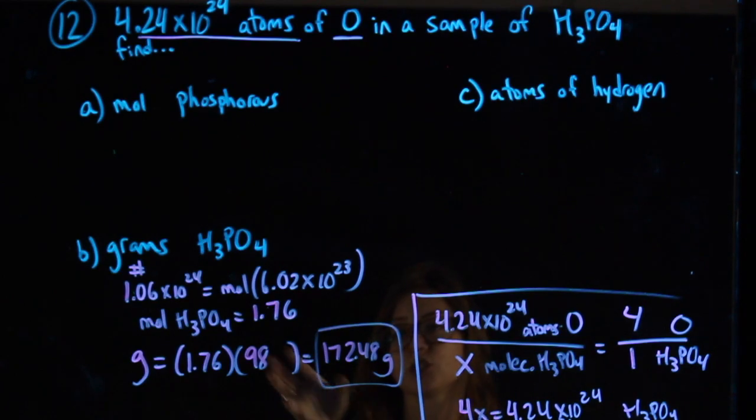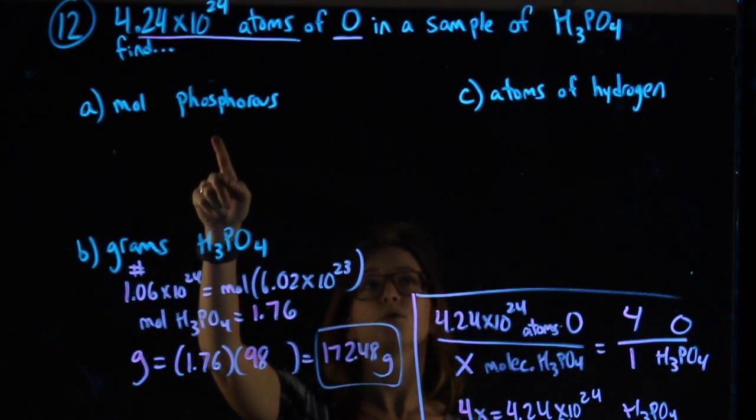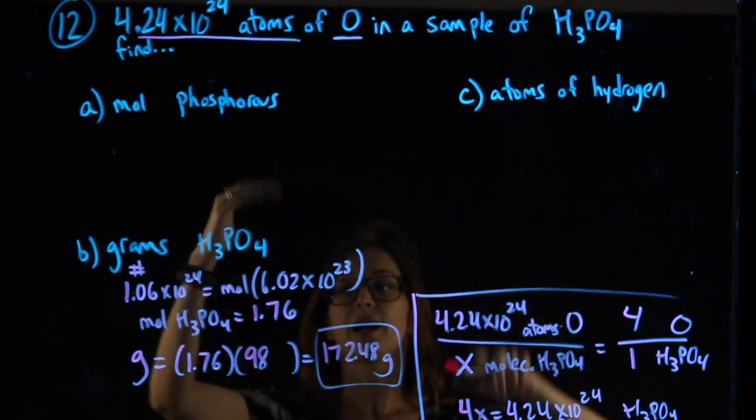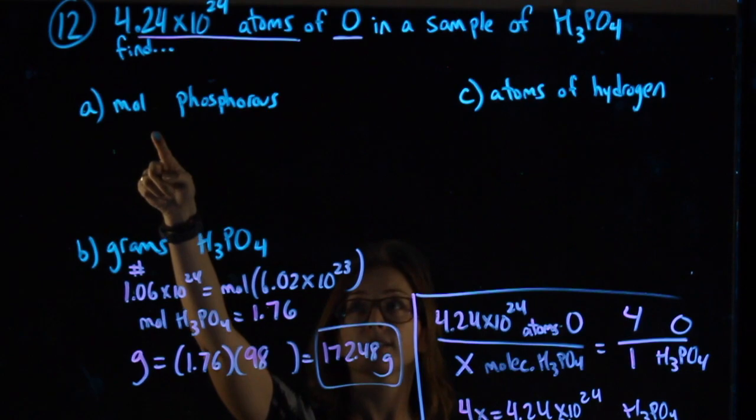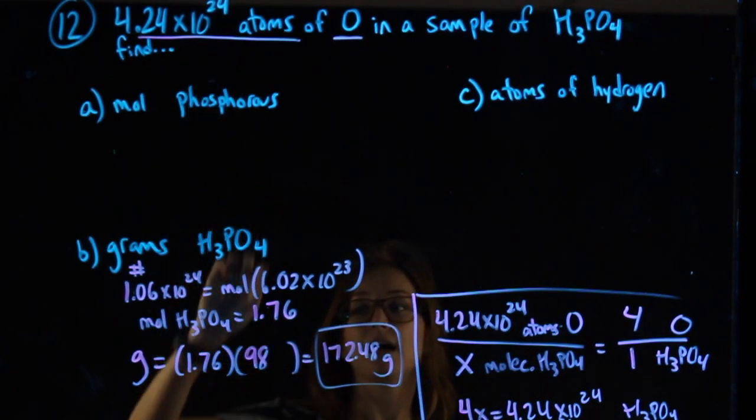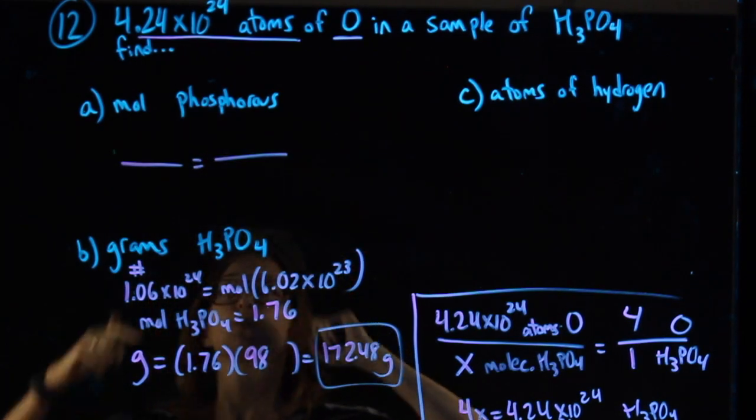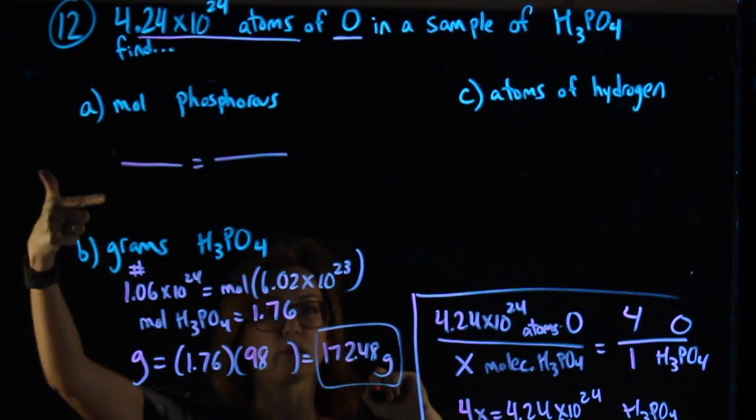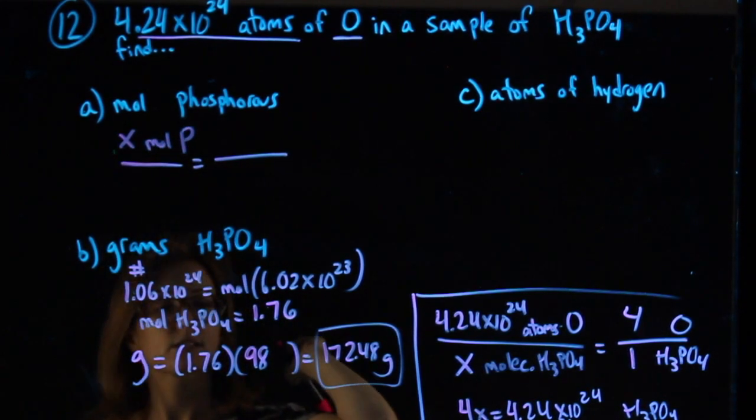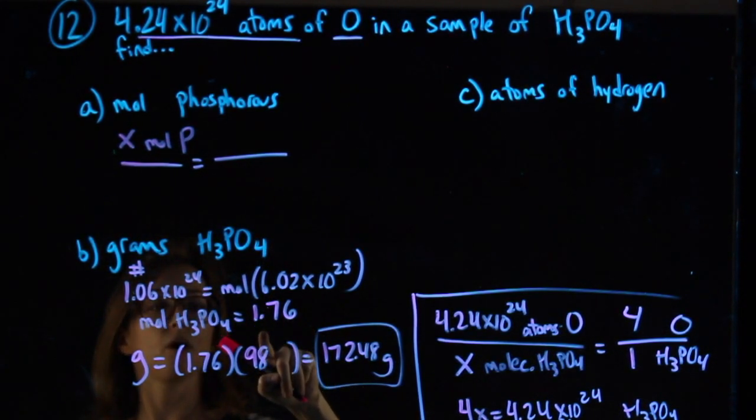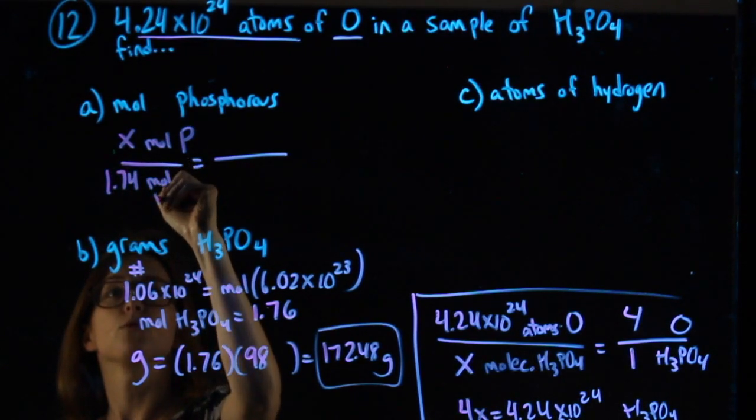From grams of the whole thing, I actually don't need to use that number ever again. But from moles of phosphorus and atoms of hydrogen, I'm going to need some numbers I just found. Moles of phosphorus I can find. That's a part, and I know my moles of the whole. So I can set up a proportion between moles of phosphorus and moles of the whole thing. I want the moles of phosphorus. I know from all this work I did earlier that I have 1.74 moles of the whole thing.